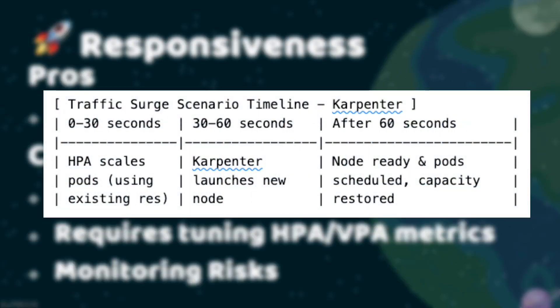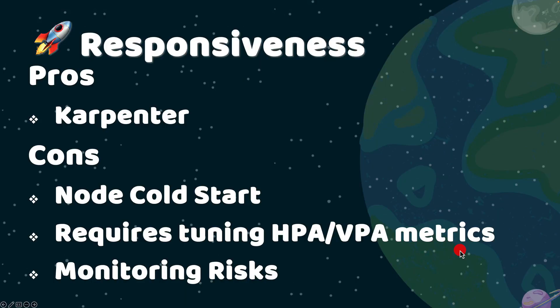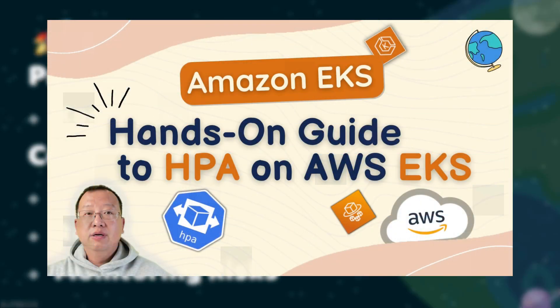There is a traffic surge timeline example showing how long it takes for nodes to be ready in EKS. As you can see, adjusting your HPA settings can reduce startup delays. If you are not familiar with HPA, check out my video: Hands-on Guide to Horizontal Pod Autoscaler on AWS EKS.